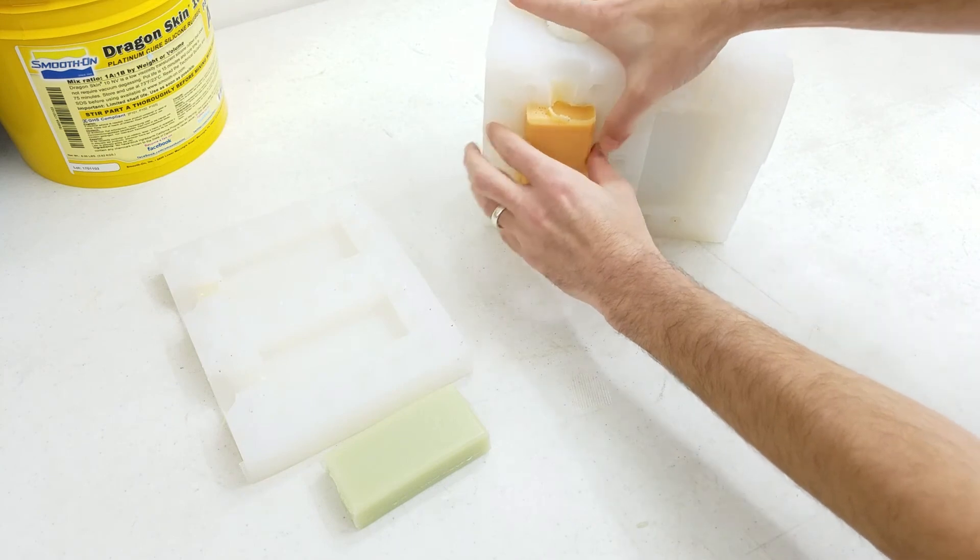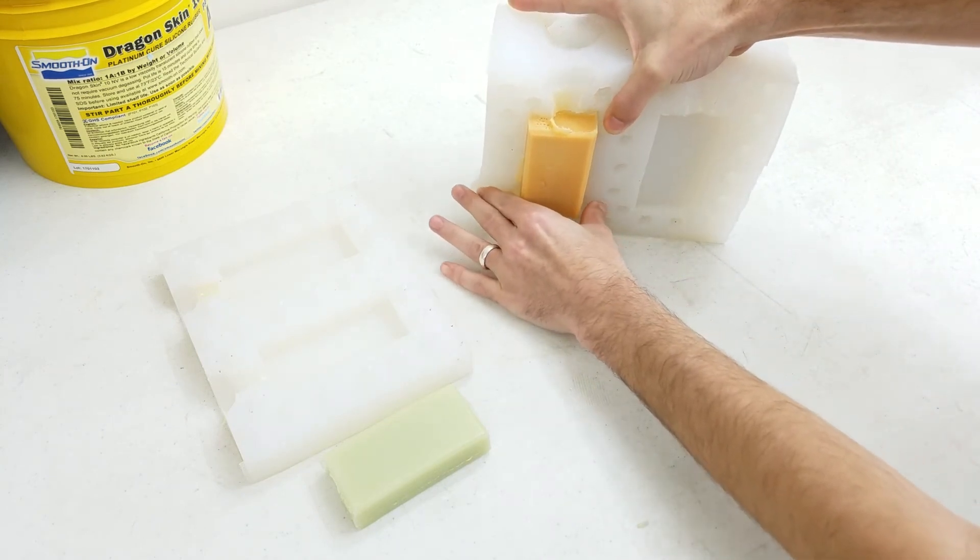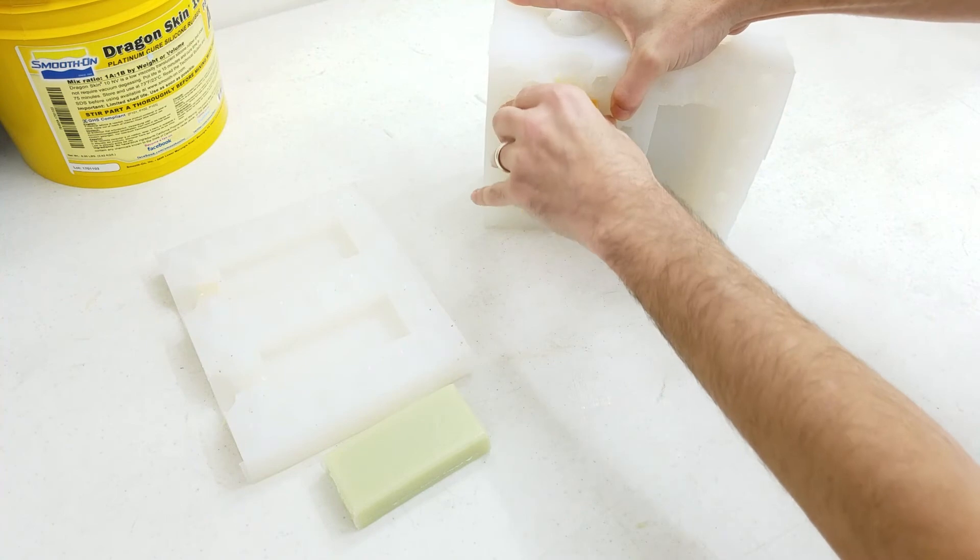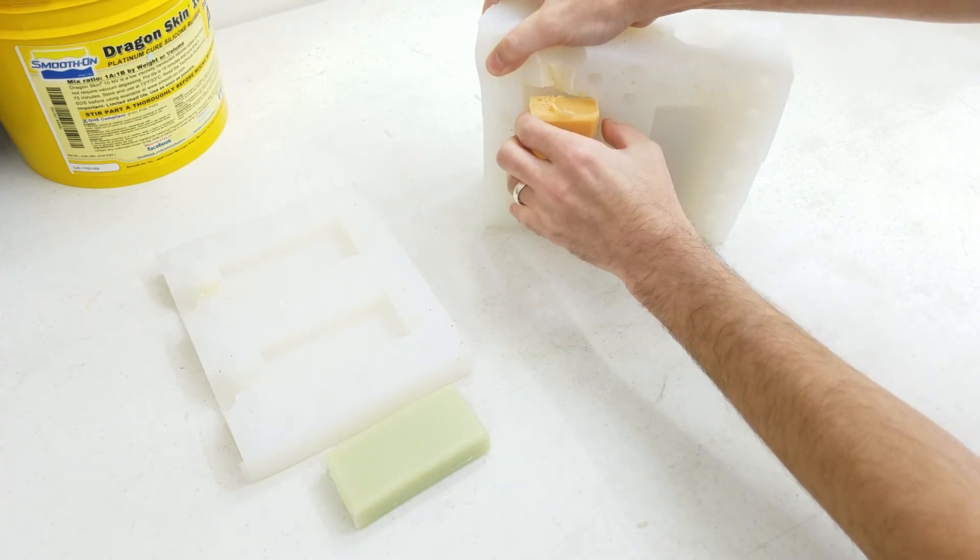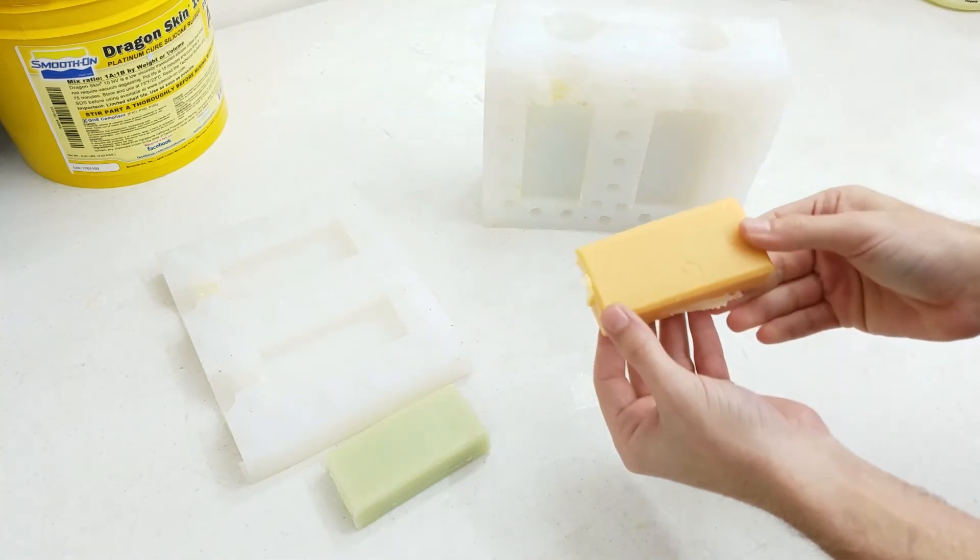We'll get the second bar out. Again just with a little wiggling and bending of the mold they come right out.